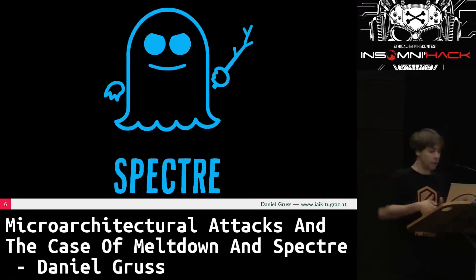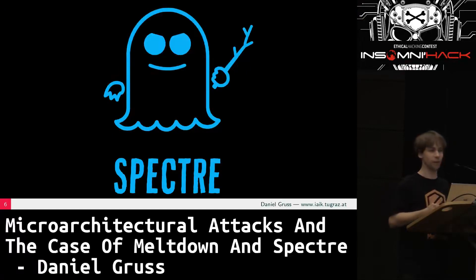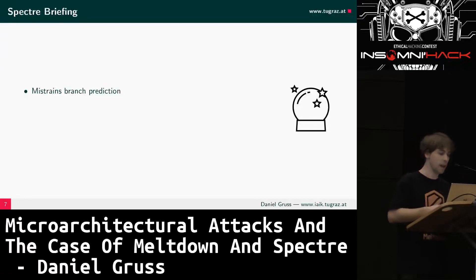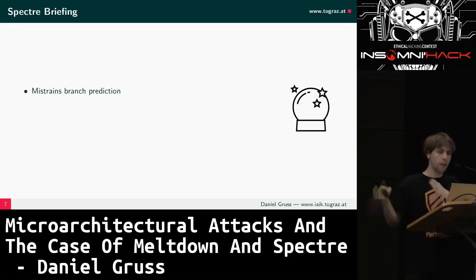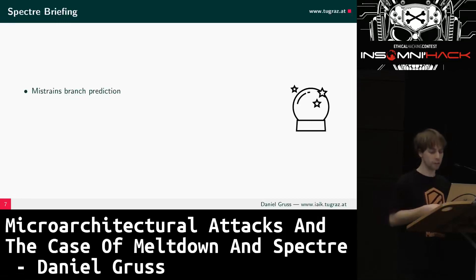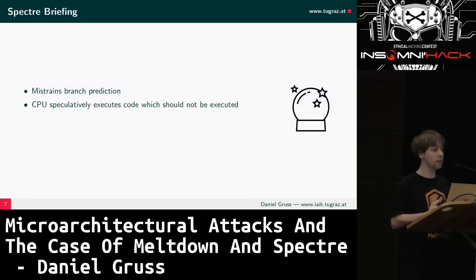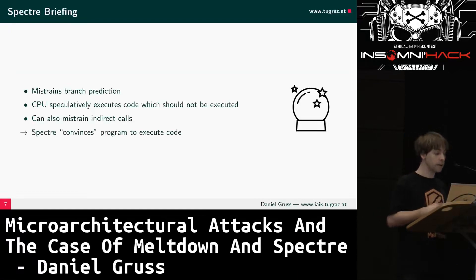Spectre is a bit different. With Spectre, you don't try to cross some wall — you trick someone into spilling their secrets by mistraining branch prediction. Branch prediction is used all over code execution in your processor. A different process can manipulate the processor to misspeculate, causing it to speculatively execute code that should not be executed — in some cases, code that would never be executed in that program. Spectre convinces the other program to execute some code and thereby spill its secrets.